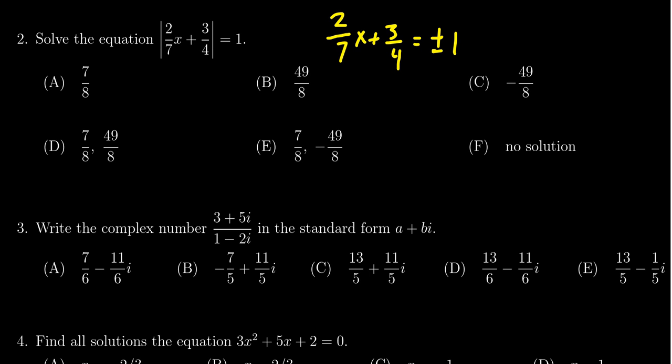I can actually consider both of these cases in tandem here. We're going to subtract 3/4 from both sides of the equation. This then gives us 2/7x equals negative 3/4 plus or minus one.